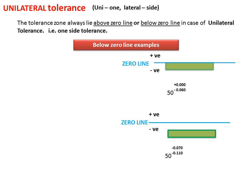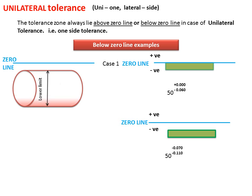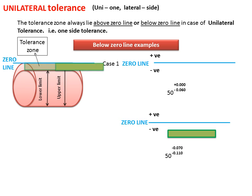Below zero line example: Case 1 — here you can see the zero line, lower limit, upper limit, and this is the Tolerance Zone. The Tolerance Zone is touching the zero line but lies below the zero line.